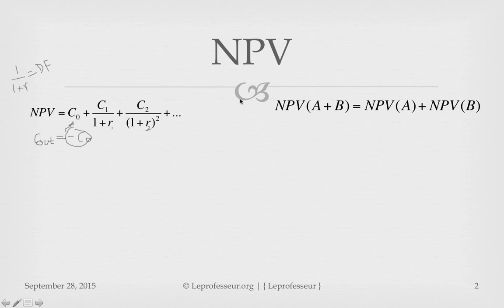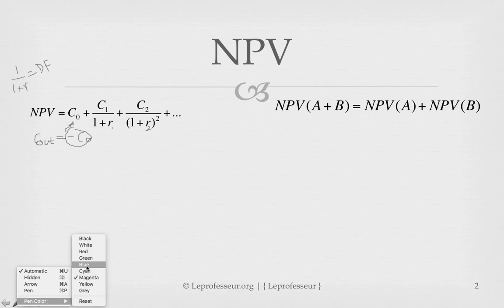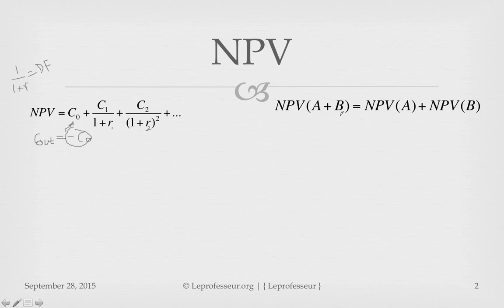Now here is an interesting formula: if you have two or more projects and you want to calculate the net present value of the overall portfolio, the NPV of both projects is equal to the NPV of the first project plus the NPV of the second project, and so on for additional projects — say projects A, B, C, and so forth.